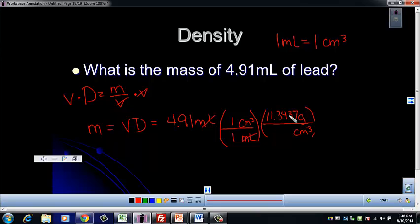Our density for lead is 11.3437 grams per centimeter cubed. Remember the per is where the line is. That's 11.3437 grams in one centimeter cubed. Centimeters cubed will cancel, and we'll end up with grams, which is what we want for mass. When you punch that into your calculator, you'll end up with 55.7 grams. Don't forget your sig figs.